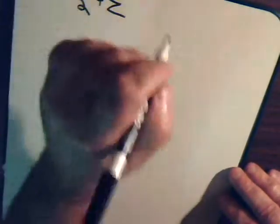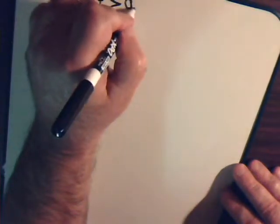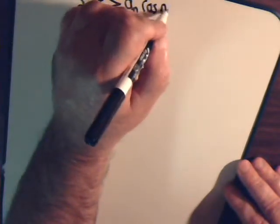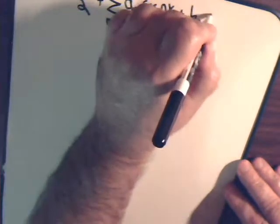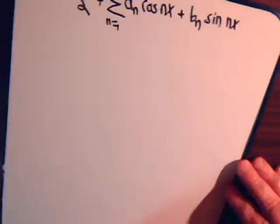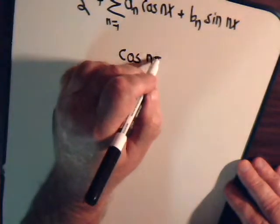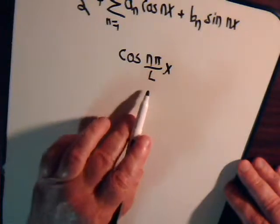So f of x equals a naught divided by 2, plus the sum from n equals 1 to infinity of a sub n times cosine of nx, plus b sub n times sine of nx. The full formula is of course cosine of (n pi over l) times x and the same for sine, but here l is equal to pi.